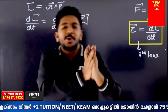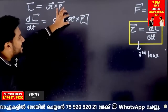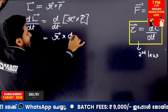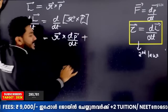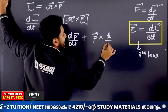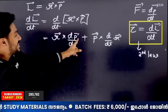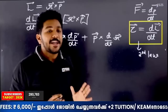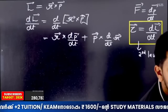We have two terms in a product, so we use the product rule. Differentiating R × P using the product rule gives us D by DT of R cross P, which expands into two terms.